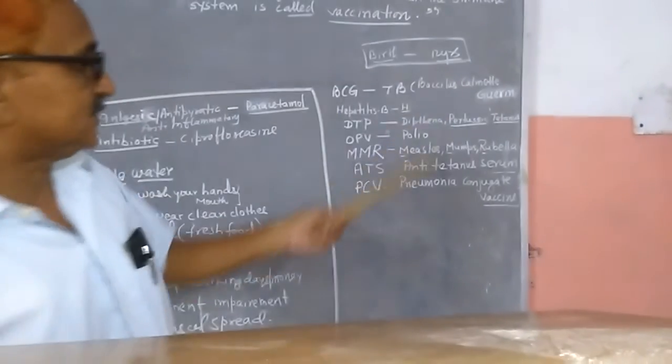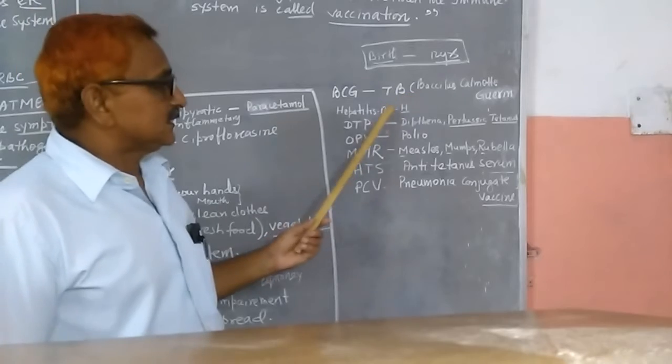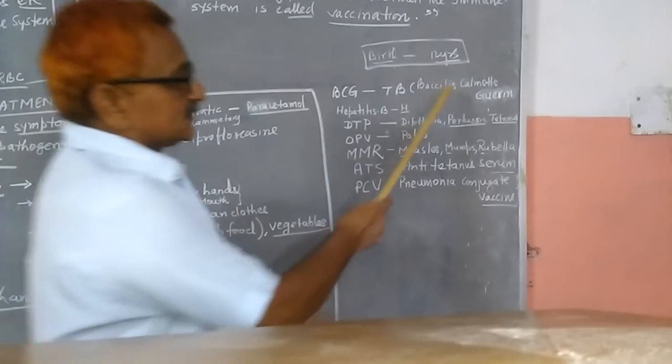Here are the vaccines for various diseases. BCG is for TB (tuberculosis).